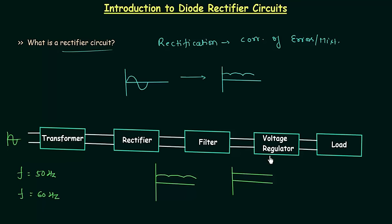The next block is the voltage regulator. This is a very important topic in analog electronics. It regulates the voltage level even if the load changes — if we change the load and we are using a voltage regulator, the voltage will remain the same. Zener diodes are used as voltage regulators; this is their most important use. You can follow the playlist for the lecture where I have explained how Zener diodes are used as voltage regulators. The last block is the load, across which we require a constant voltage supply.